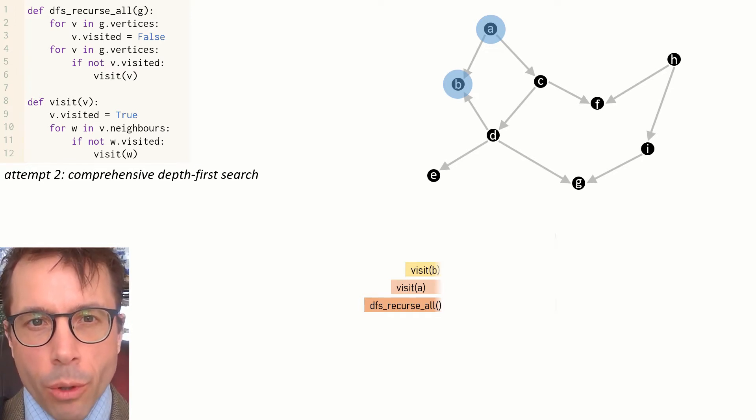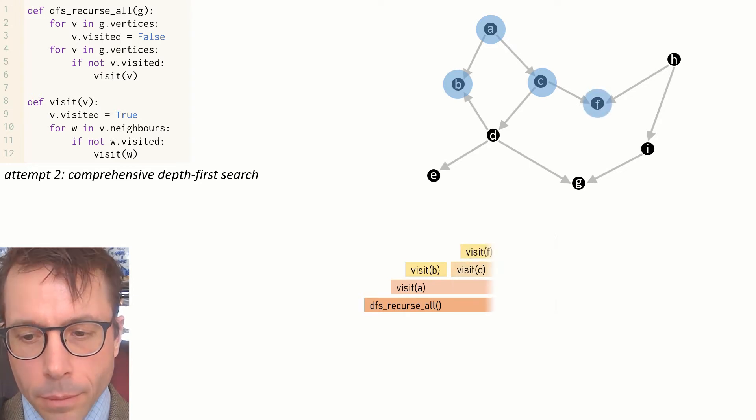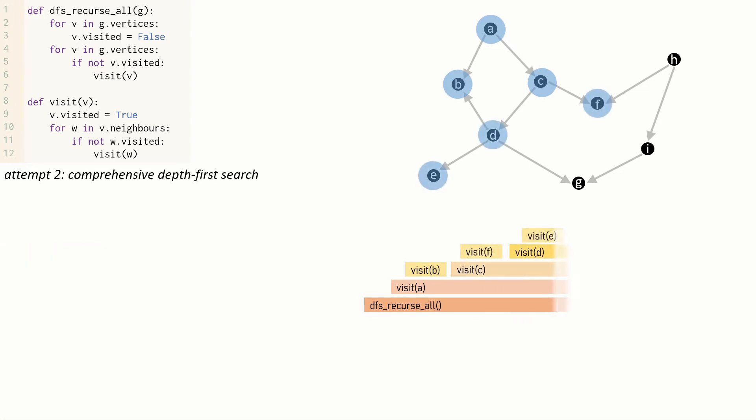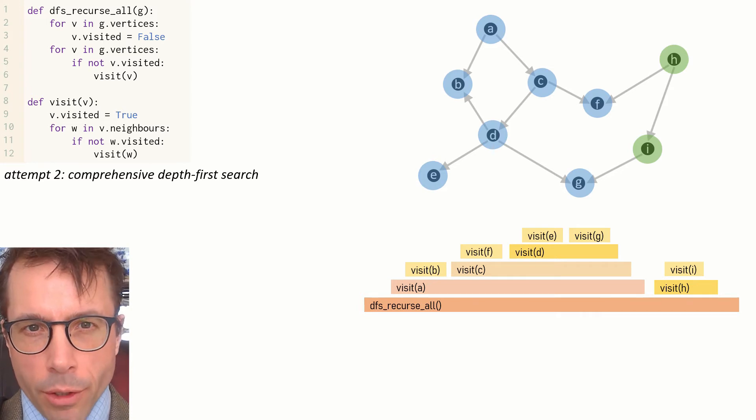When we visit A, we'll visit all of its neighbors, starting with B in this case, so I'm going to draw another horizontal bar to show the call to visit B. B has no neighbors, so the call to visit B terminates and we return to the loop inside visit A. I'll picture this by ending the visit B bar, and then visit A will call visit on its next neighbor.